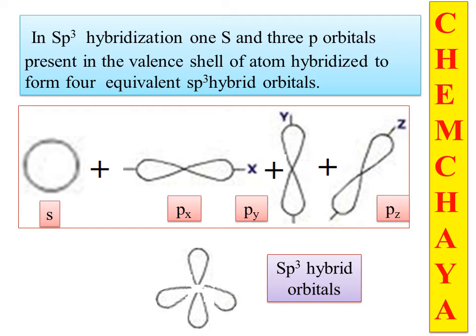Atomic orbitals are different shapes. If you combine s and p atomic orbitals, we get hybrid orbitals which are of a new shape. We have sp3 hybrid orbitals. If you combine one s-orbital with three p-orbitals, you get four hybrid orbitals. These are oriented in the four corners of a tetrahedral. The bond angle is 109 degrees 28 minutes.